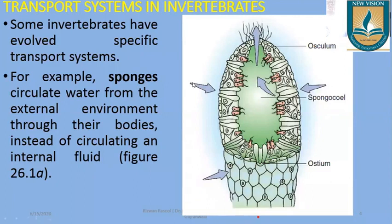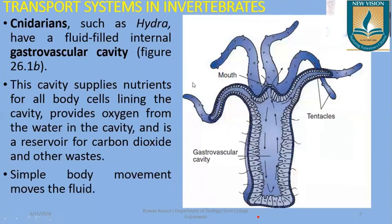Coming to the circulatory system of Hydra, Hydra is a cnidarian and it has a cavity in the center called the gastrovascular cavity. This gastrovascular cavity helps in circulation of nutrients inside the body and supplies the nutrients all over the body. The cells lining the cavity provide oxygen from water into the cavity and take in carbon dioxide in other ways.